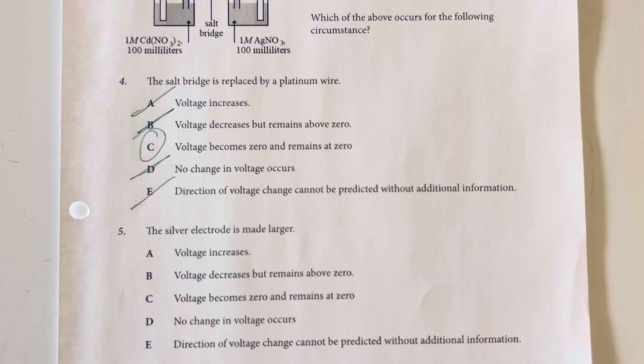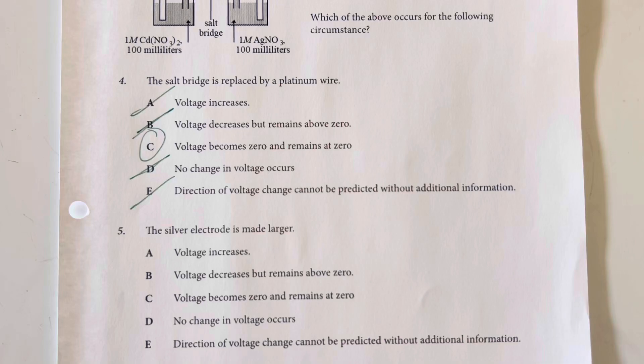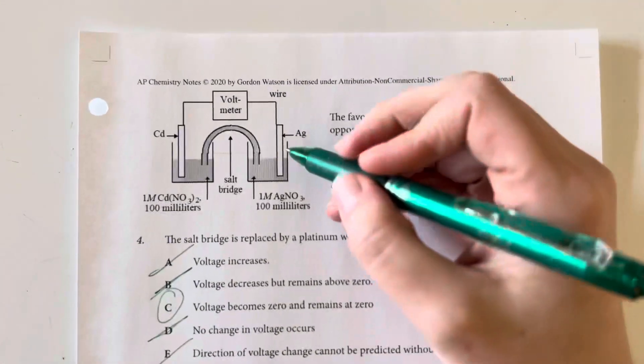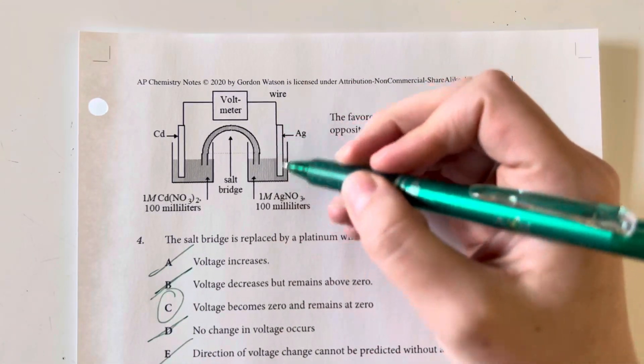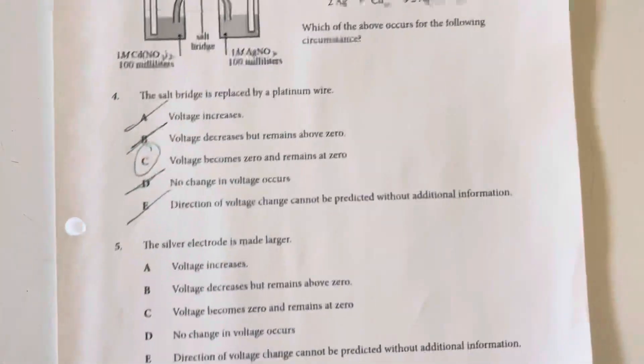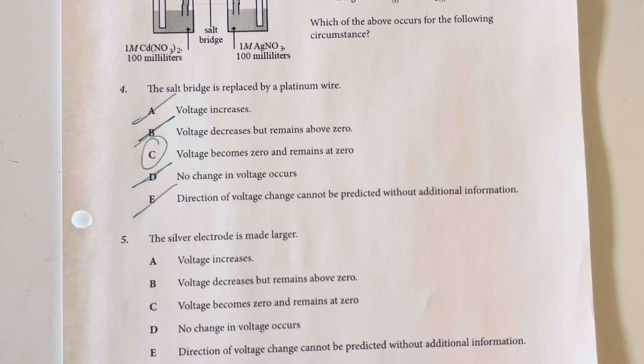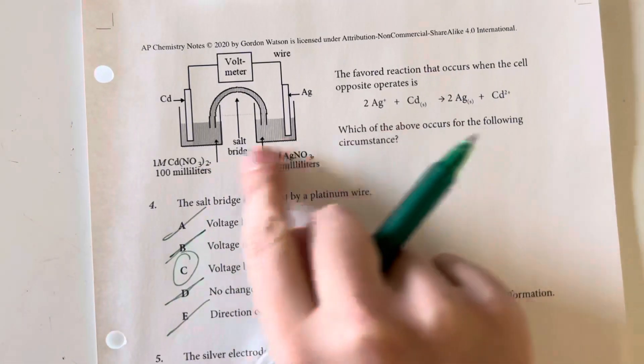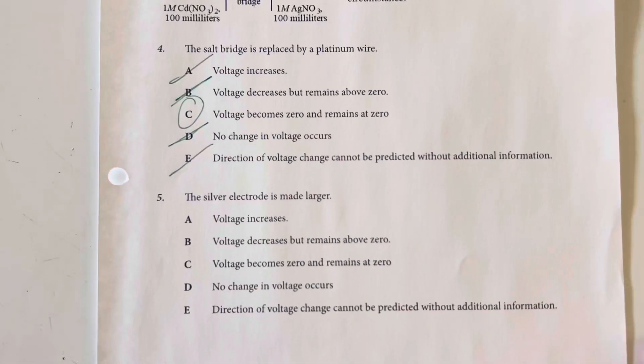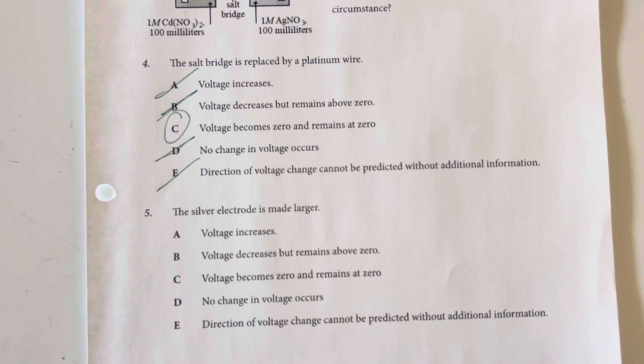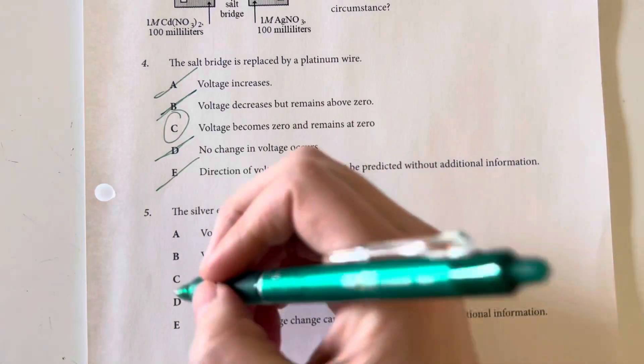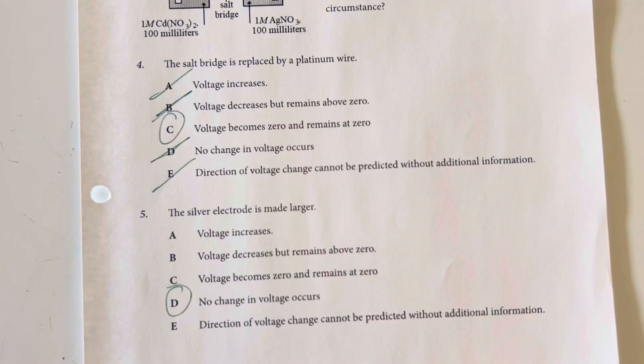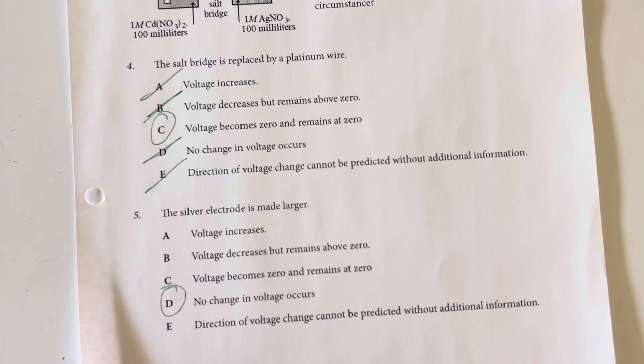The silver electrode is made larger. Just by increasing the size of the electrode, I'm not going to change the overall voltage. The reaction will occur at the rate it occurs and produce the voltage it produces. I would need to change concentrations or something about the salt bridge to change voltage. So 'no change in voltage occurs' is my answer choice, option D.